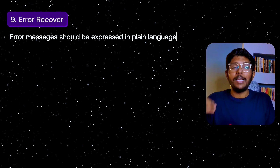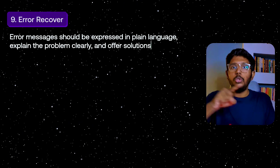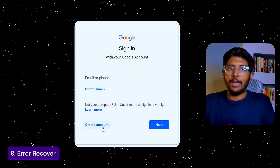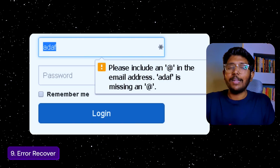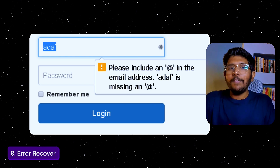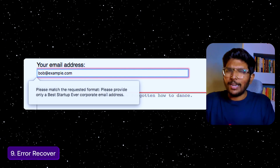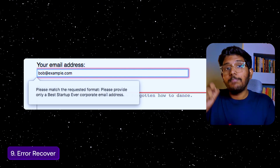Ninth principle: Help Users Recognize, Diagnose, and Recover from Errors. In error messages, use plain language to explain what went wrong and how to fix it. For example, if users enter an email and miss the format, explain what the mistake is. A clear, helpful error message guides users to a successful outcome.